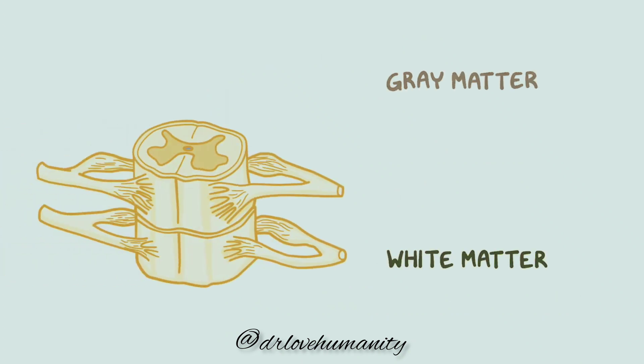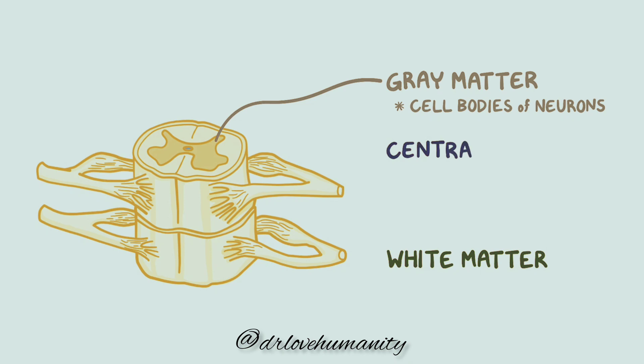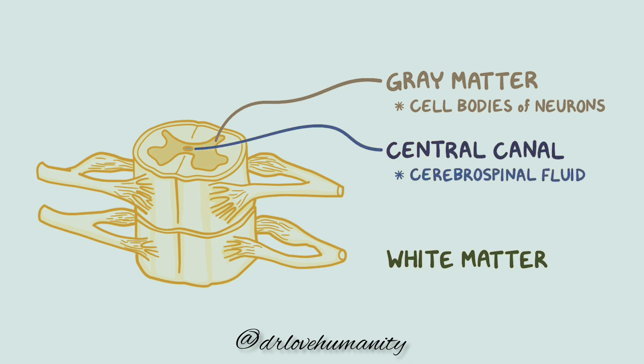The spinal cord itself is composed of both gray and white matter. Gray matter is found within the medial portion of the spinal cord and is shaped like a butterfly. This is where the cell bodies of different neurons can be found. In the center of the gray matter, there is a small cavity called the central canal, which is filled with cerebrospinal fluid.